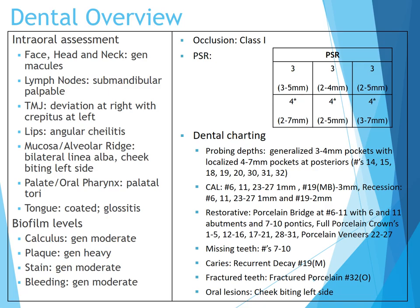For probing depths, we observe generalized 3 to 4 millimeter pockets with localized 4 to 7 millimeter pockets at the posteriors, noted at 14, 15, 18, 19, 20, 30, 31, and 32. Clinical attachment loss is observed at 6, 11, and 23 to 27 of one millimeter, and at 19 mesial buccal for three millimeters. Recession observed is at 6, 11, and 23 to 27 of one millimeter, and at number 19 for two millimeters.